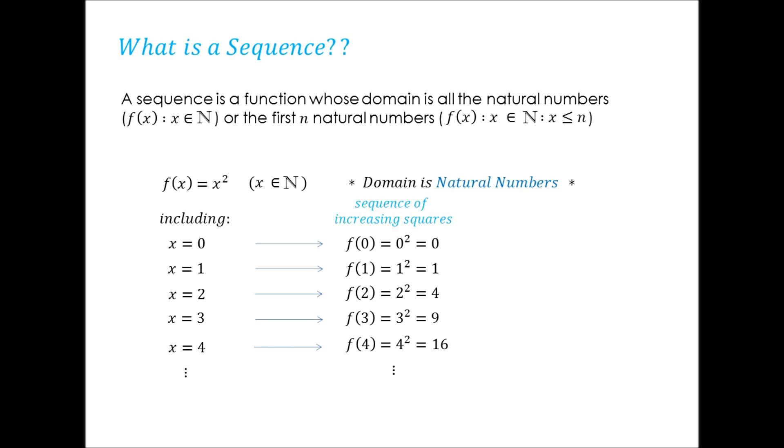Now notice how this sequence is infinite. Only because its input values went from 0, 1, 2, 3, 4, and on to infinity. Taking into account all possible natural numbers as a domain. But the definition also says or the first n natural numbers.